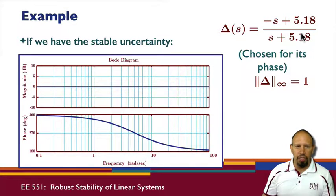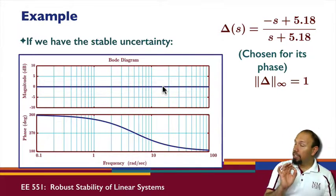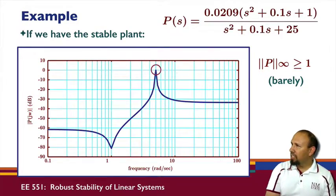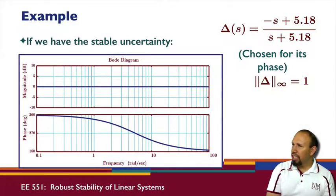The significant thing is the infinity norm of this is equal to one for all frequencies. So this is a specific uncertainty. We have a specific plant, we have a specific uncertainty. Now this uncertainty is not a random uncertainty; we chose it carefully.